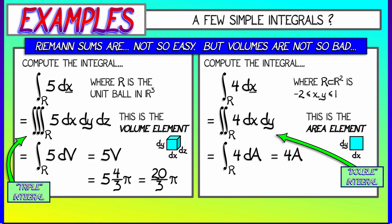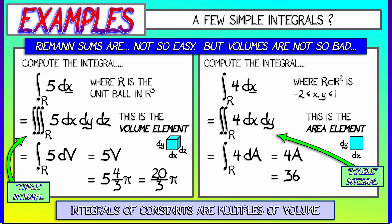And dA integrates to A. The 4 comes out in front because integration is linear. And I get 4 times the area of this square of side length 3, 4 times 9, 36. There you go.